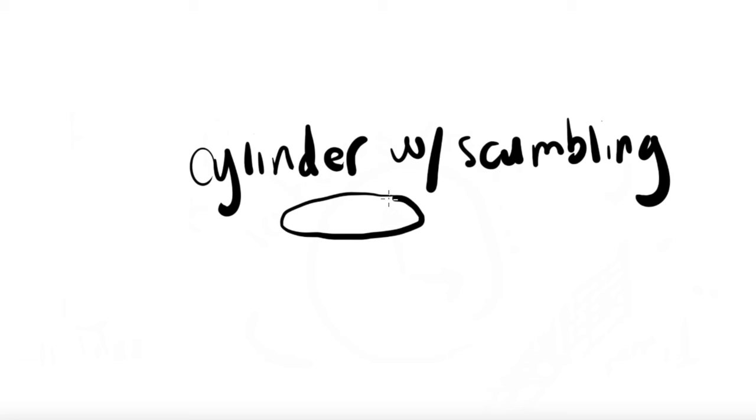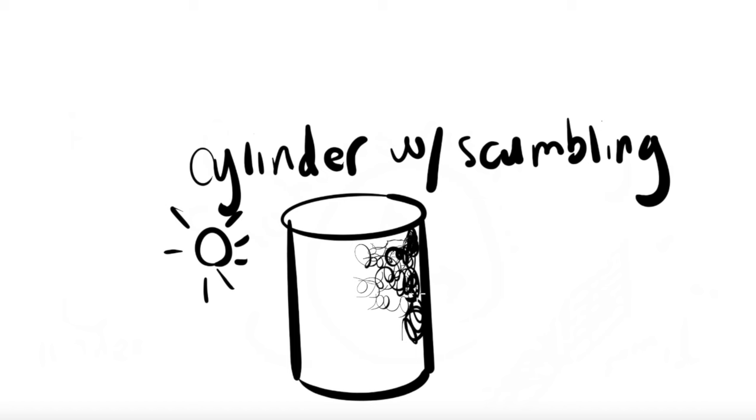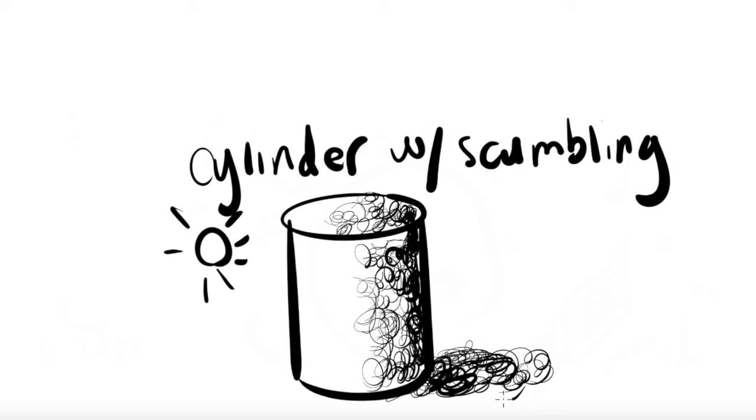Our last practice activity is to draw a cylinder with scumbling. Lots of squiggles to show value. To make the cylinder, we're going to draw a flattened oval, two straight lines on the left and right, and then a nice smile on the bottom. We're going to give a light source and then explore some squiggly lines that gradually fade from dark to light. To render nice value, we're also going to add a little cast shadow with nice dark scumbled squiggles.